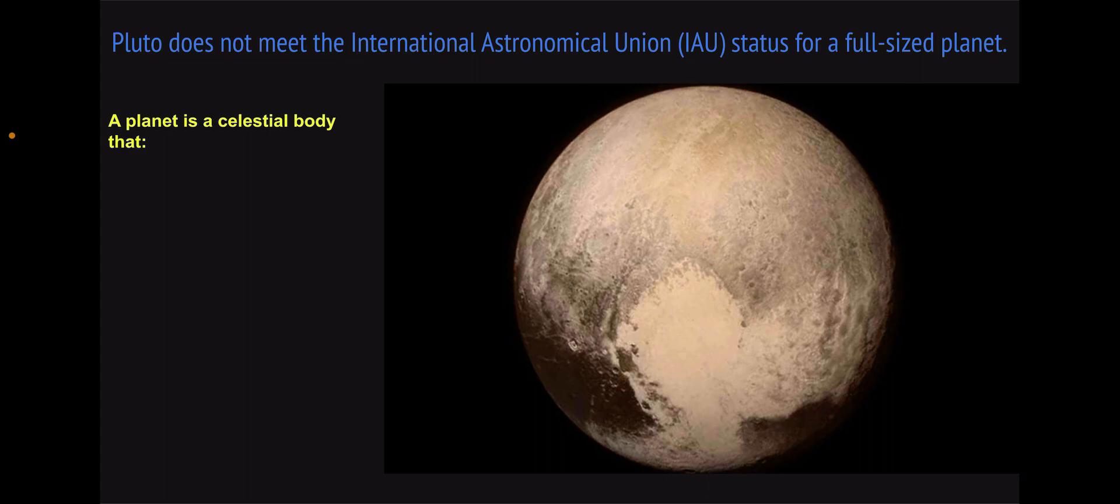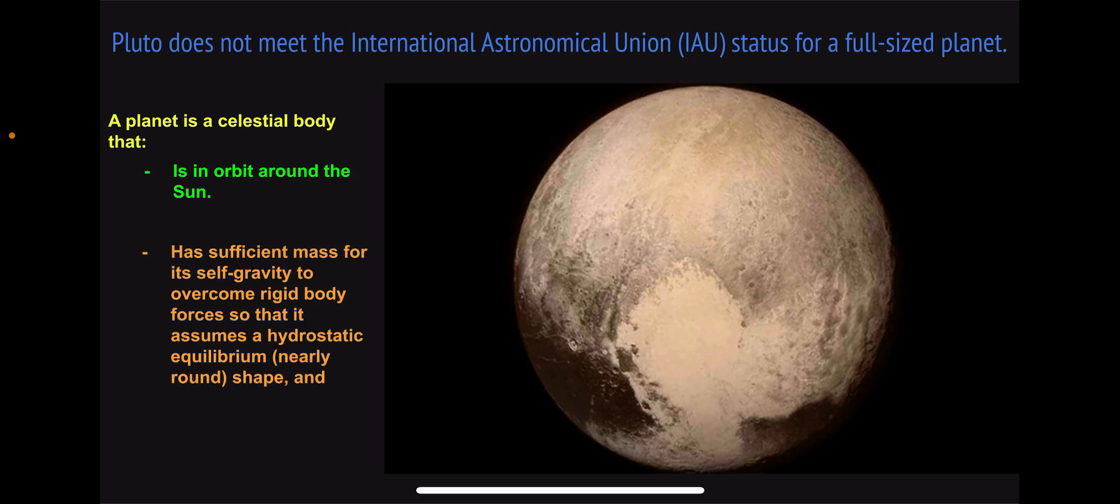A planet is a celestial body that: A. Is in orbit around the Sun, B. Has sufficient mass for its self-gravity to overcome rigid body forces so that it assumes a hydrostatic equilibrium or a nearly round shape, and C. Has cleared the neighborhood around its orbit.